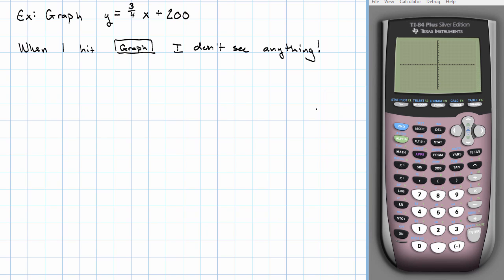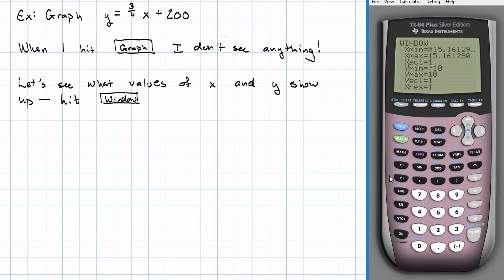That's no good. Why not? Let's see what values of x and y are actually showing up on my graph. To do that, I'm going to hit the window button. Oh, well, there's the problem, right? When x is zero, y is going to be 200. But my y's are only going up to 10. That's not going to do me any good.